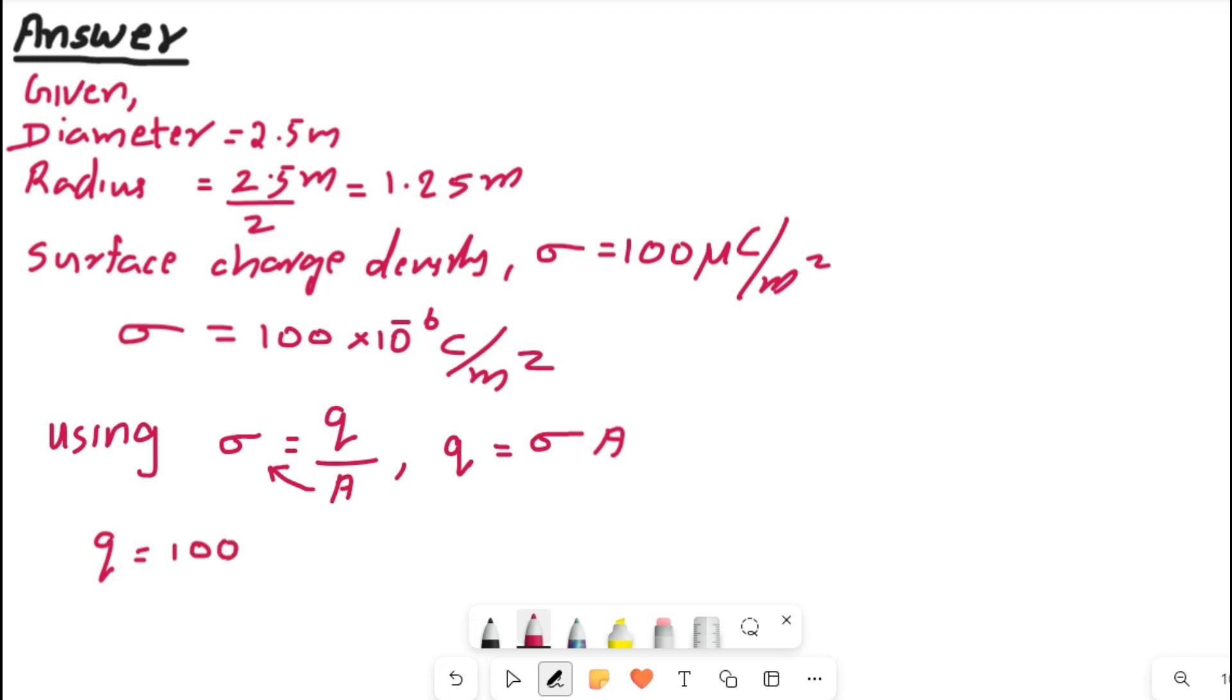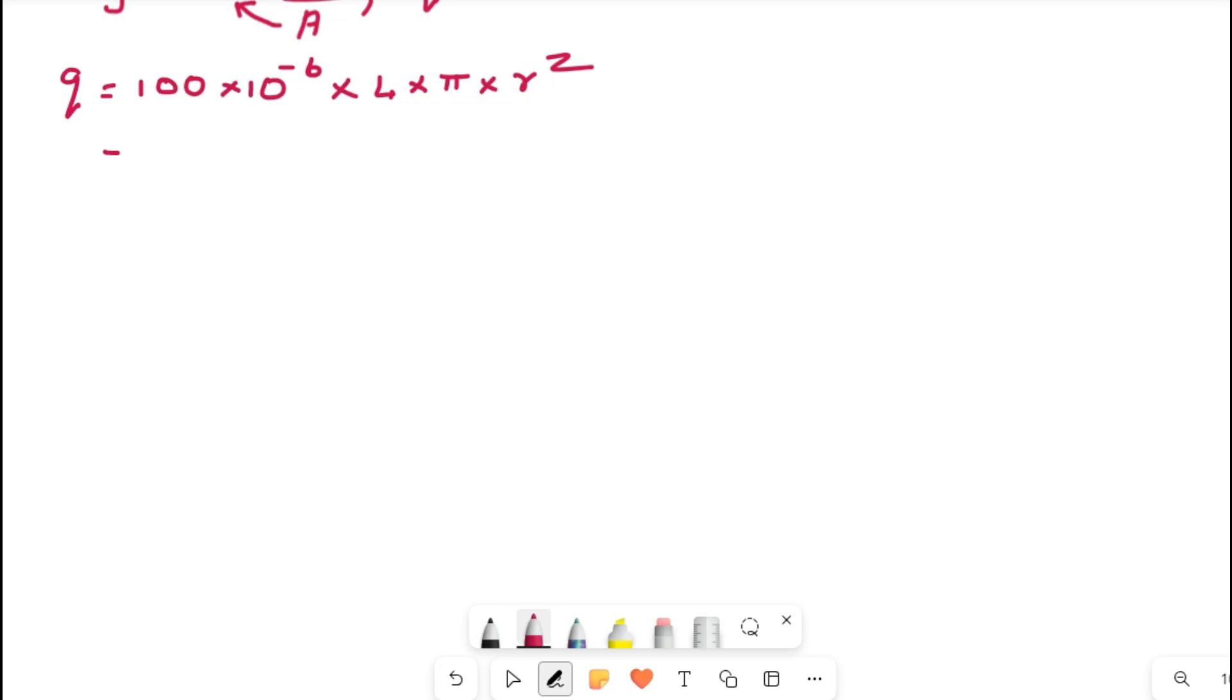So Q is equal to sigma, which is there above, 100 into 10 raised to minus 6 coulomb, and area of a spherical body will be 4 pi R square. So 4 into pi into R square. Let me continue.